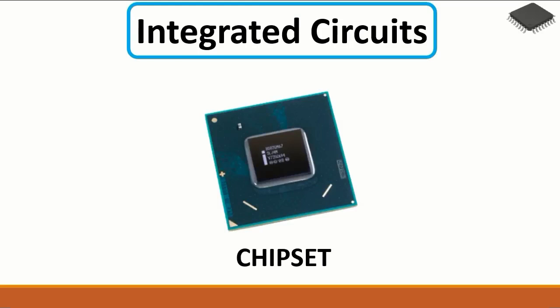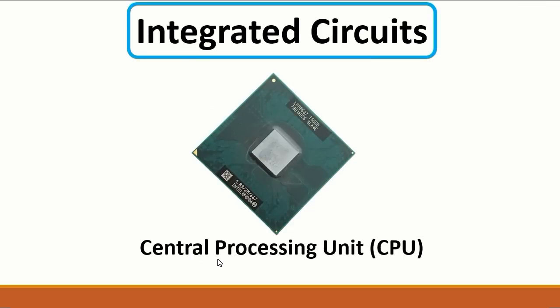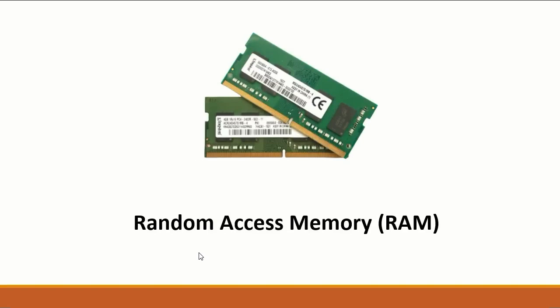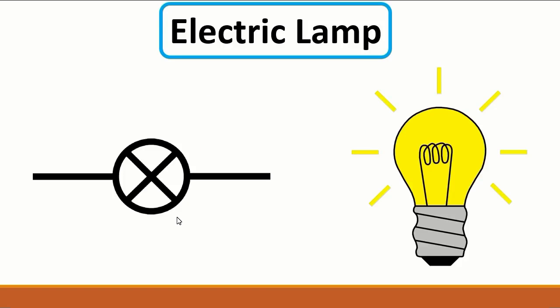Chipsets include the processor, GMCH, ICH, graphics card, and so on. We also have the Central Processing Unit, or CPU, and the Random Access Memory, or RAM.